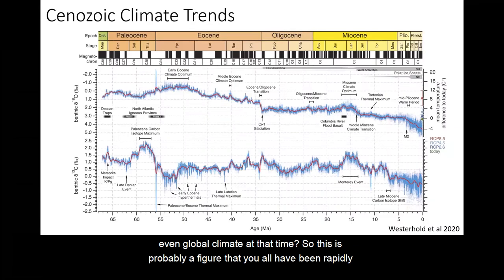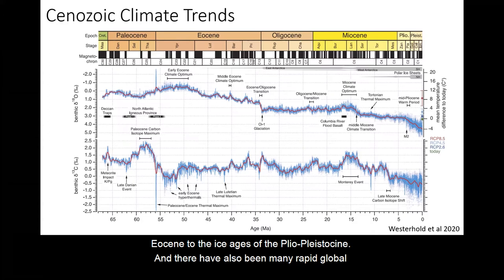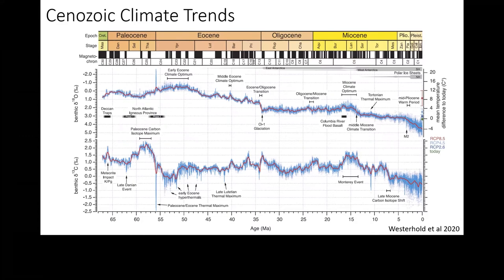This is probably a figure that you all have been rapidly gaining familiarity with this fall, and I include it here to remind us that the Cenozoic has had a huge amount of variability in climate, ranging from the extreme greenhouse conditions of the early Eocene to the ice ages of the Pleistocene, and there have also been many rapid global change events, such as the hyperthermal events in the Paleogene, and the pulses of glaciation at the Eocene-Oligocene boundary, and throughout the Oligocene, Miocene, and more recently as well.